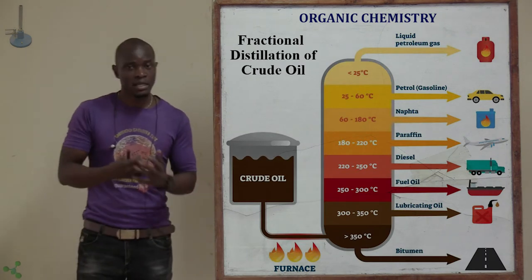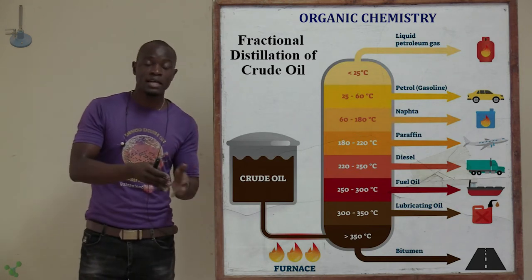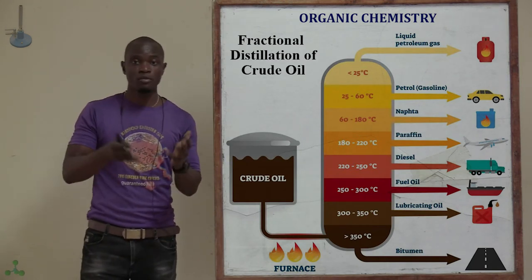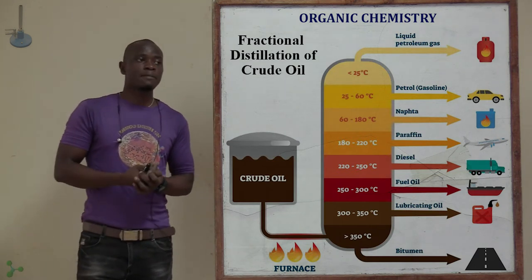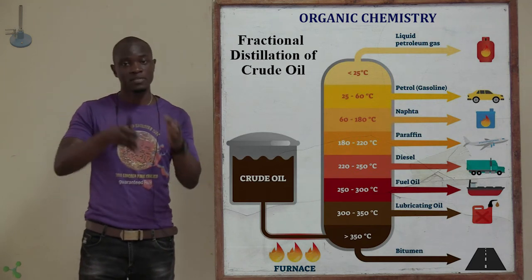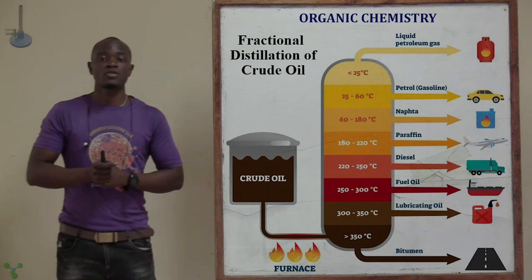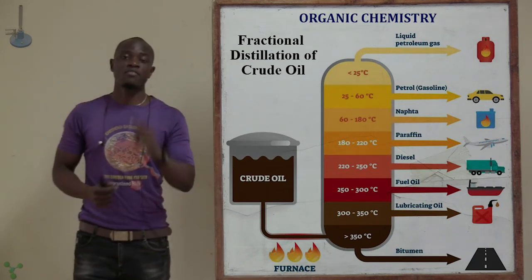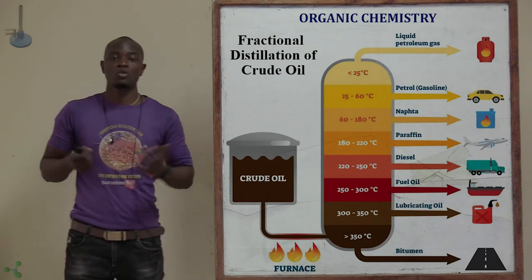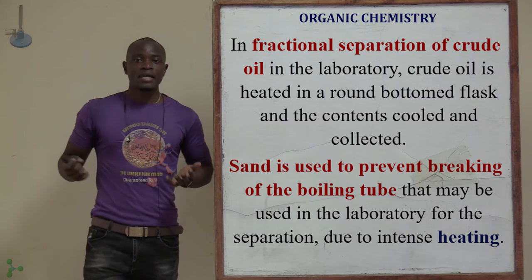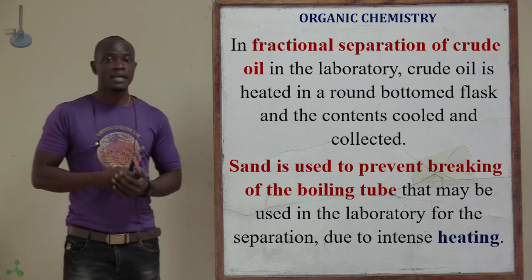From fractional distillation, you will first obtain methane, then ethane, then propane, then butane. The boiling point of hydrocarbons increases as the number of carbon atoms increases. So as the number of carbon atoms increases, the boiling point also increases, meaning methane comes first, then ethane, then propane, then butane. How is fractional distillation of crude oil mainly carried out?